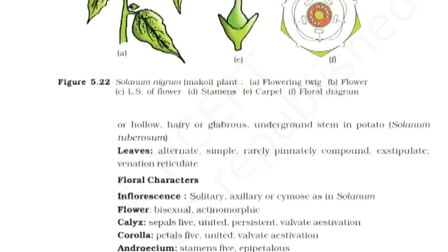Page No. 80. Figure 5.22 Solanum Nigrum Mackay. Plant A, Twig B, Flower C, LSO Flower D, Stamens E, Carpel F, Floral Diagram.